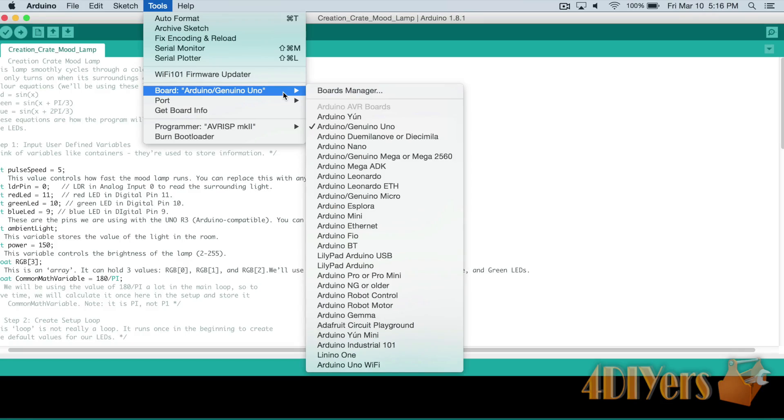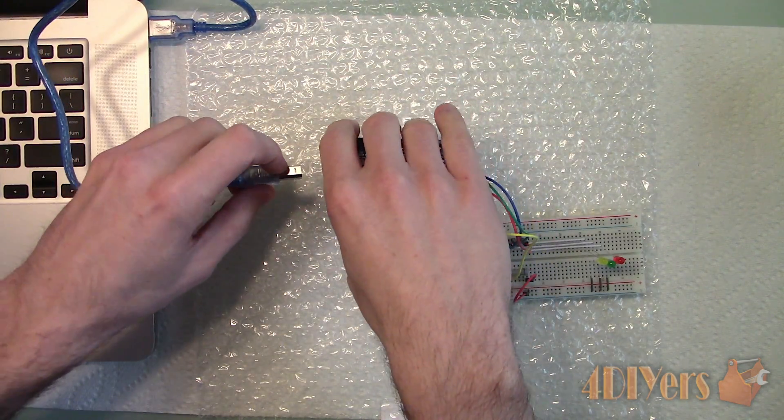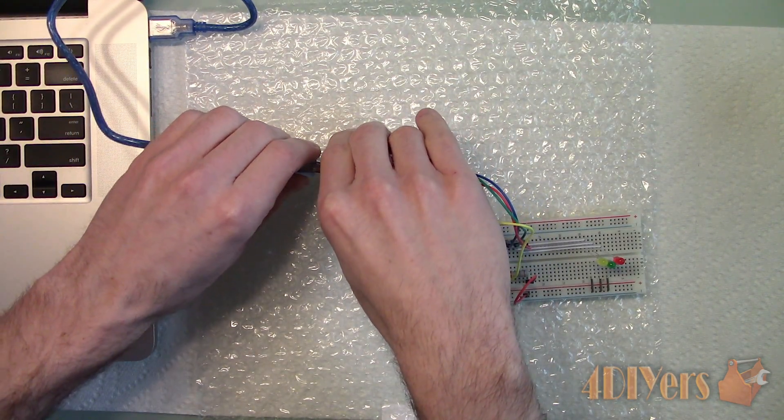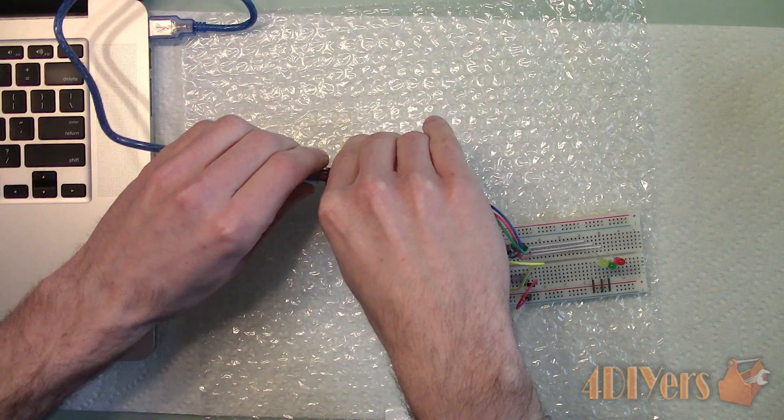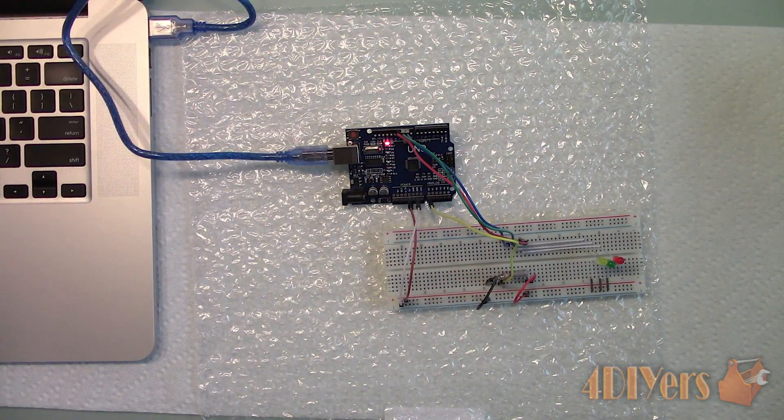If there are any errors, the program will automatically highlight them. Plug your board into the computer using the provided cable. You will need a USB port on your computer. A red diode will illuminate along with another one flashing to ensure the board is correctly connected.